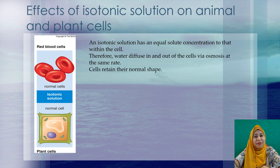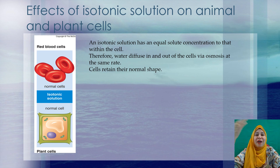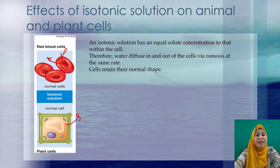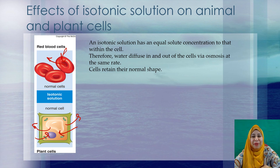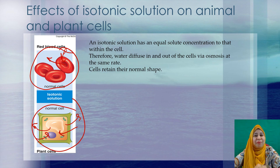An isotonic solution has equal solute concentration outside and inside the cell. Therefore, water molecules will diffuse in and out of the cell at the same rate, and the cell will retain its normal shape.